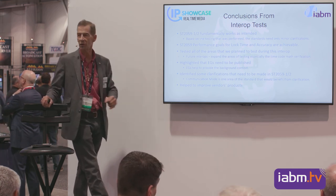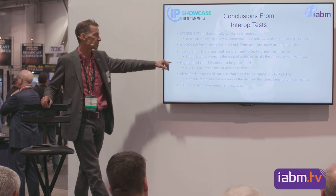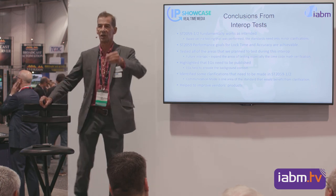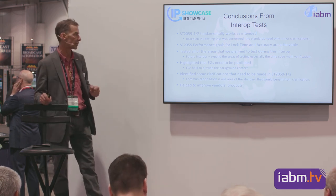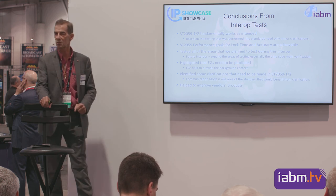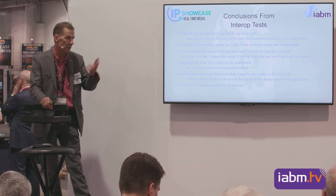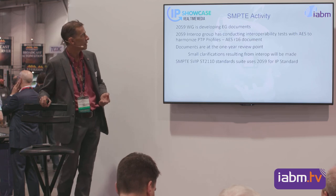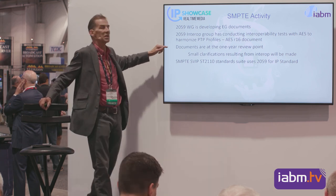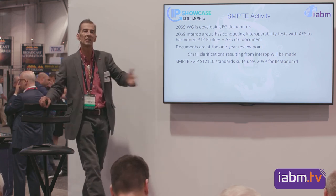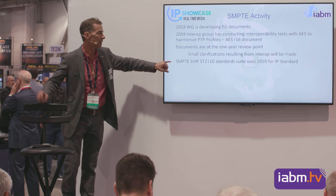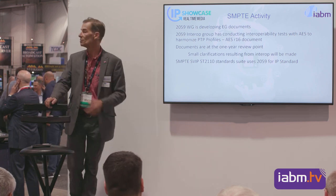The standard needs a little bit of adjustment — we released it two years ago at this NAB, and we've discovered clarifications to make it easier to implement, but we found no fundamental problems. Performance goals are adequate and achievable. We've tested all areas of 2059 we wanted to cover. We have ongoing interop testing because we're evolving designs and implementations; there will be future interops to test more deeply and broadly. We also need to write engineering guidelines — it would be awful to throw a standard at the industry and say 'figure it out.' Every vendor who participated has benefited from shared experience and improved their own products.